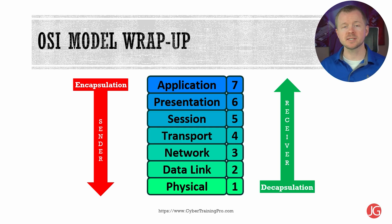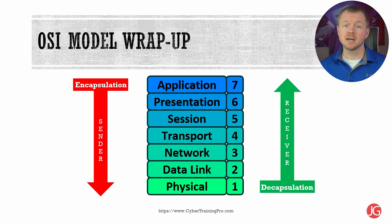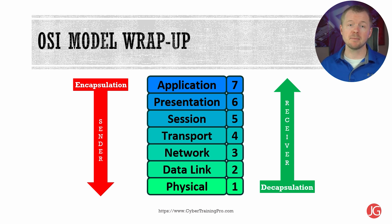You will absolutely use the OSI model in your career, and it can be very effective at both troubleshooting issues and explaining technologies. If you don't have a correct IP address, then it's probably a layer 3 issue. If you can't connect to other systems on the local network, it might be a layer 2 issue, and there might be a problem with the cable or the NIC. These are just a few examples of things that you might see in the real world.